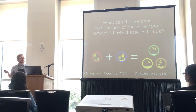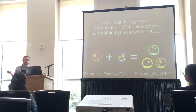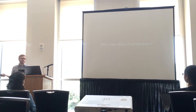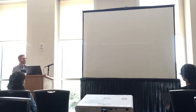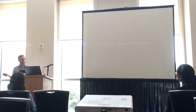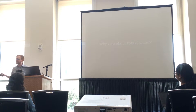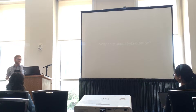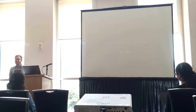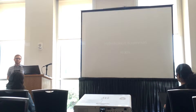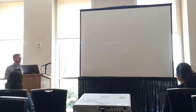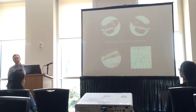What can the general composition of the genealogical blood type of species tell us? Why do you care about that today? Hybridization is common. Between 10 to 30% of species are known as hybridized species with one other species, and as we look at more genomes, we see evidence of this.